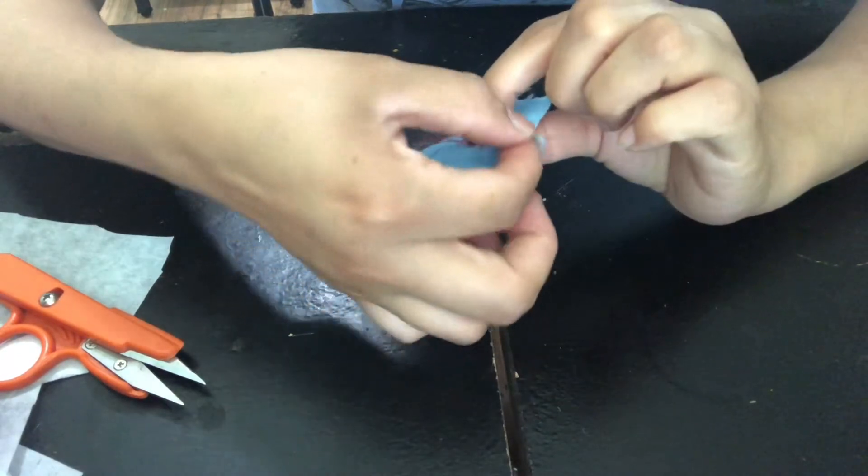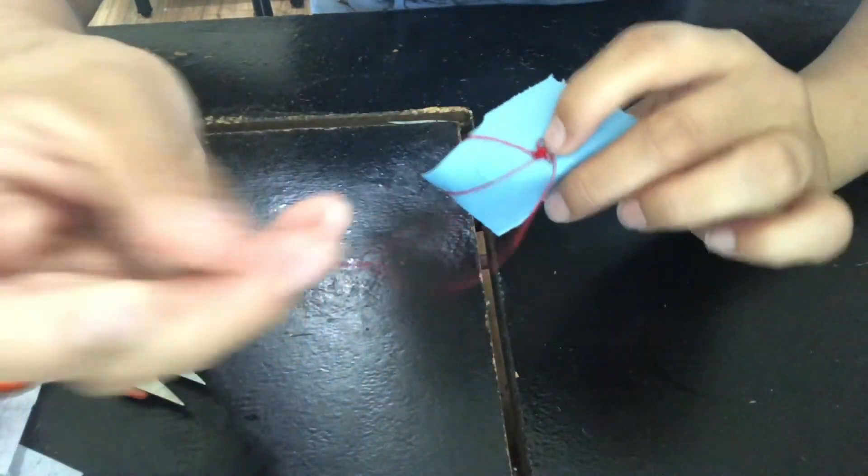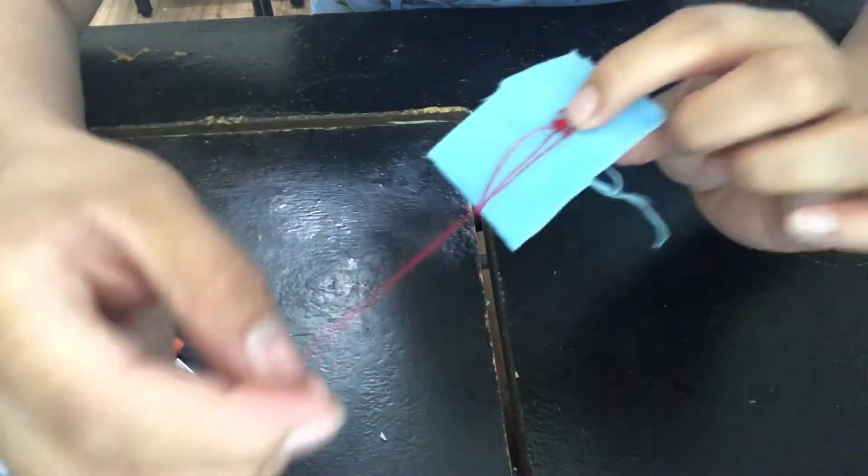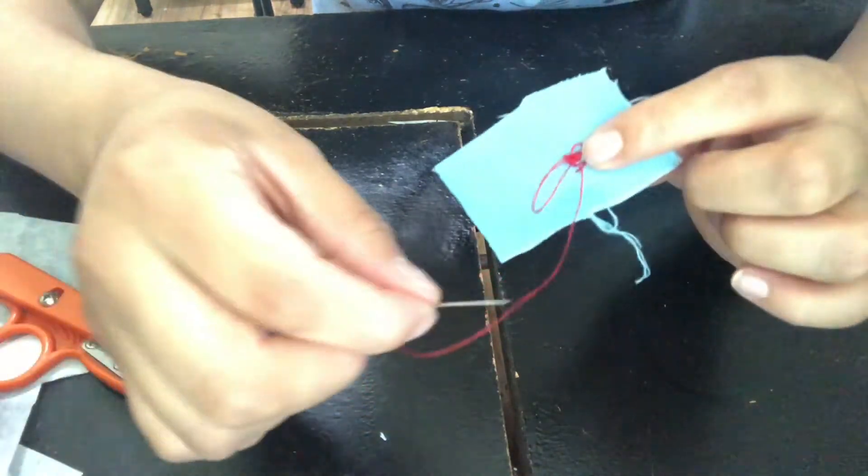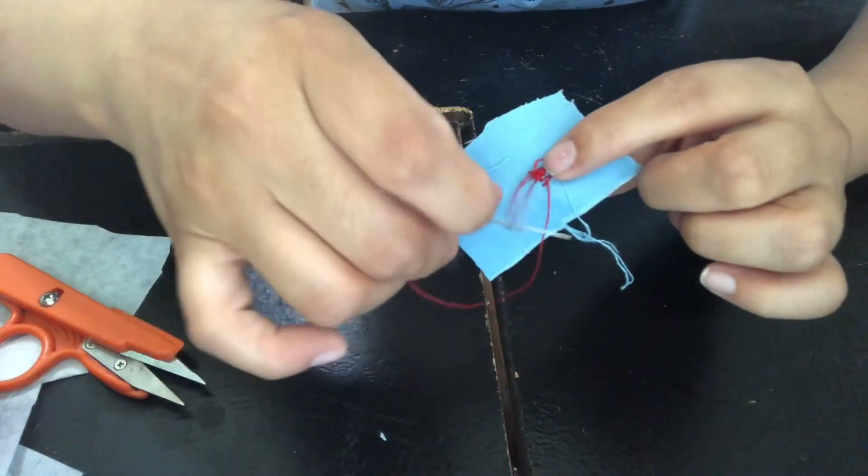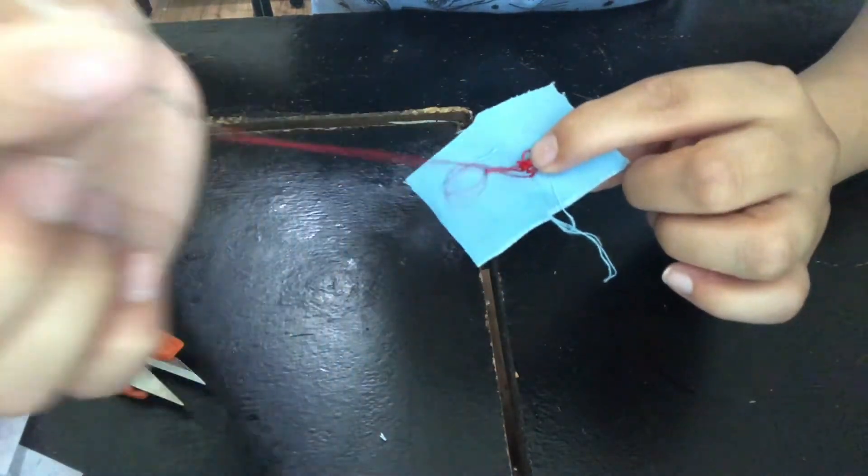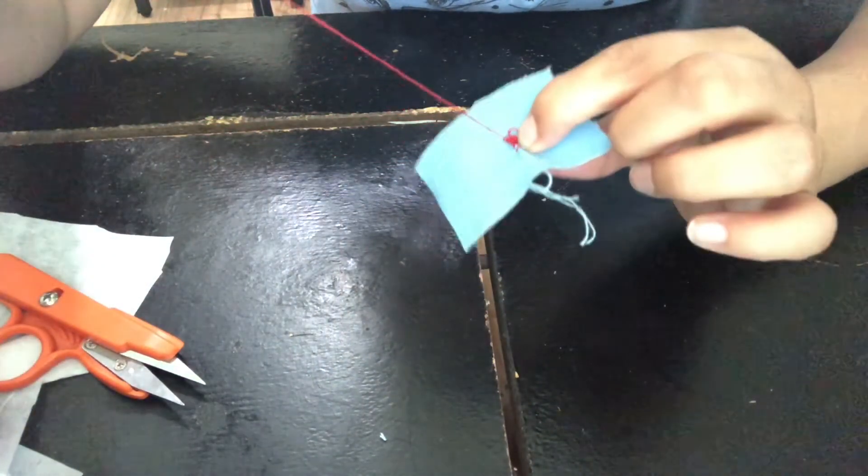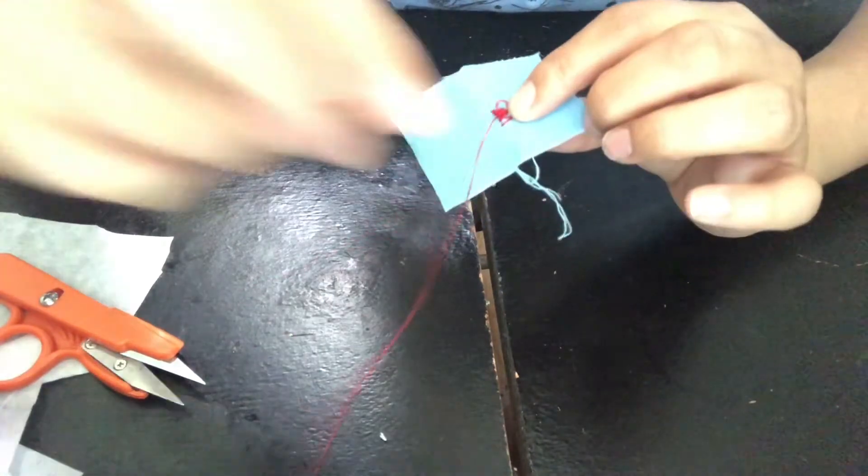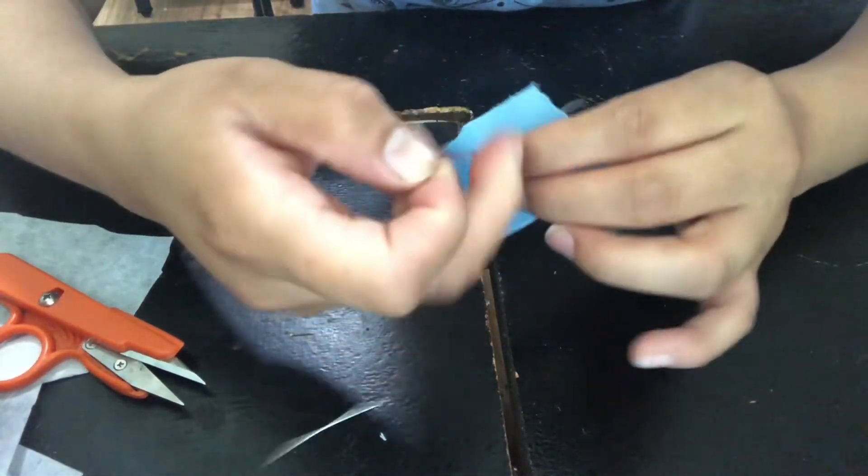That way you form a hoop or a circle like that. Then you want to bring the needle through there twice, and then you're going to form a knot. You're just going to pull on it and it locks in that thread.